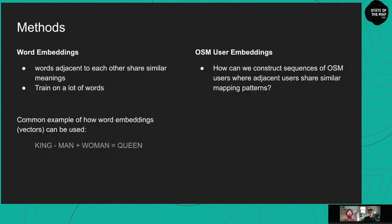Word embeddings are an increasingly popular approach in natural language processing and machine learning. The basic idea is that words adjacent to one another share similar meanings. With a large enough training set you can reduce words to vectors and perform mathematical operations — a classic example being: king minus man plus woman equals queen. We want to translate this to OSM user embeddings, asking: can we construct sequences of OSM users where adjacent users share similar mapping patterns?